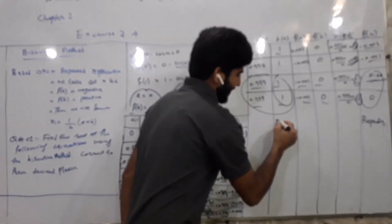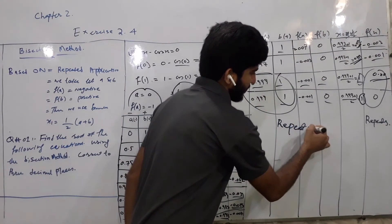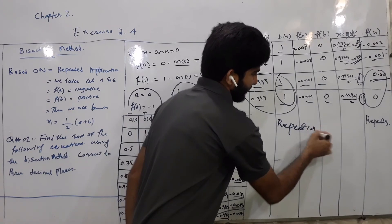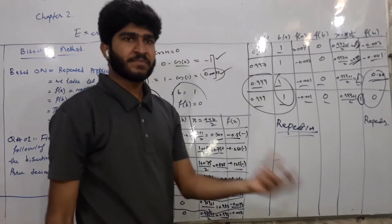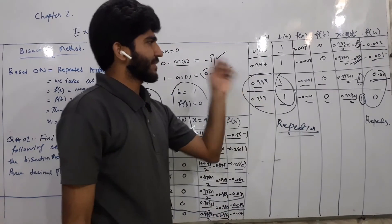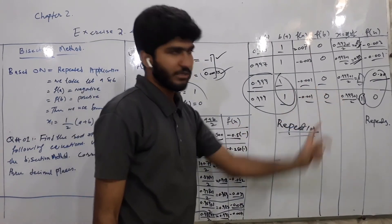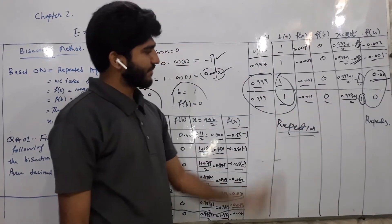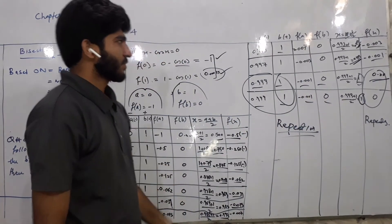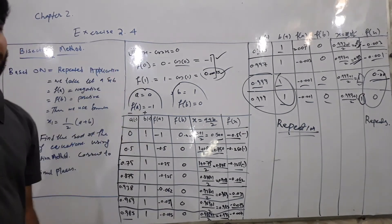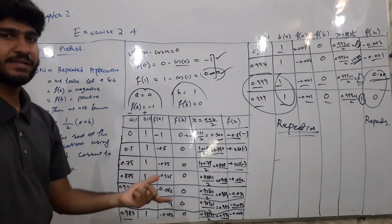Repetition آ گئی — numerical methods میں approximate value لیتے ہیں. تو یہ ہمارا approximate value ہے. یہاں پر question ختم ہوا. اگلے ویڈیو میں question number 1 کا part 3 کریں گے.